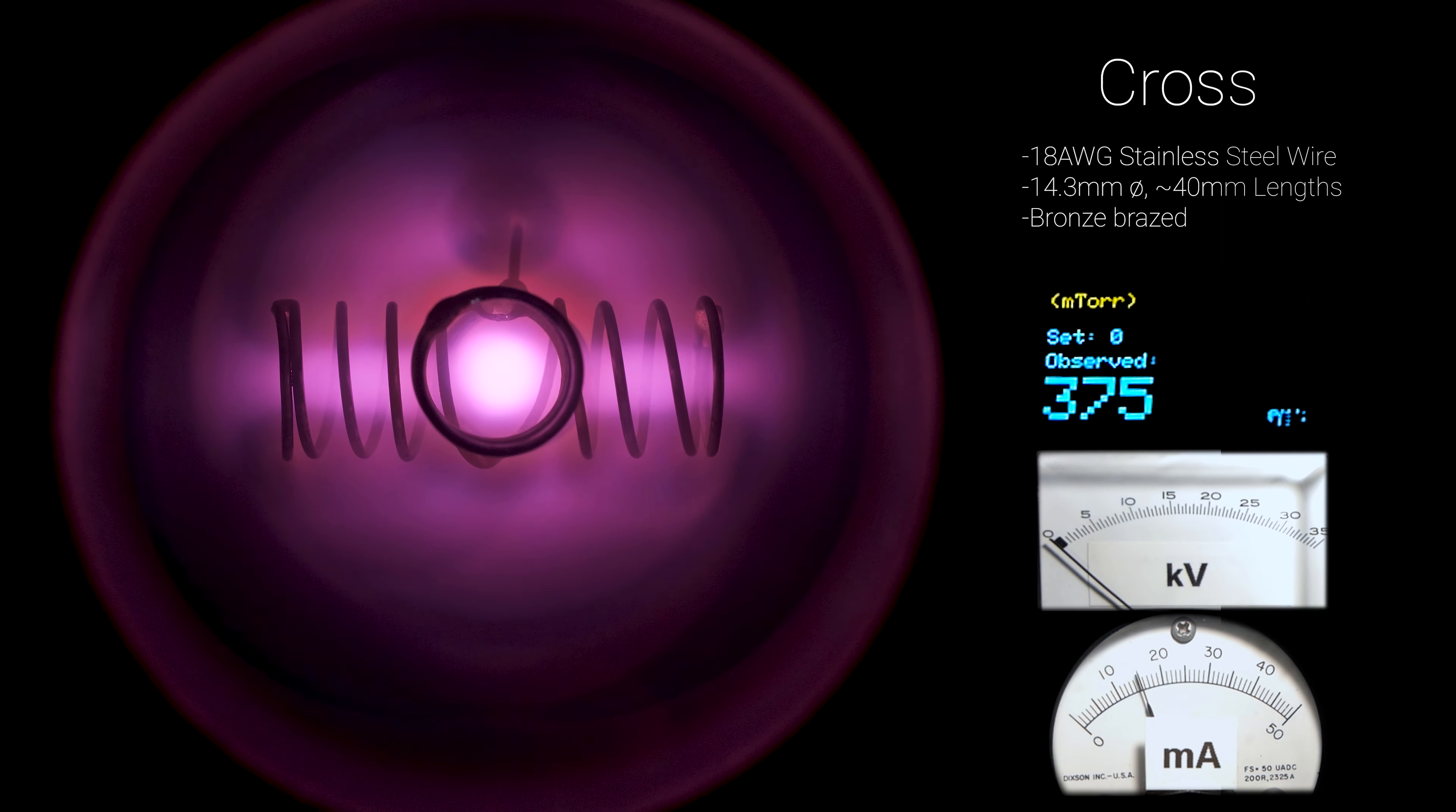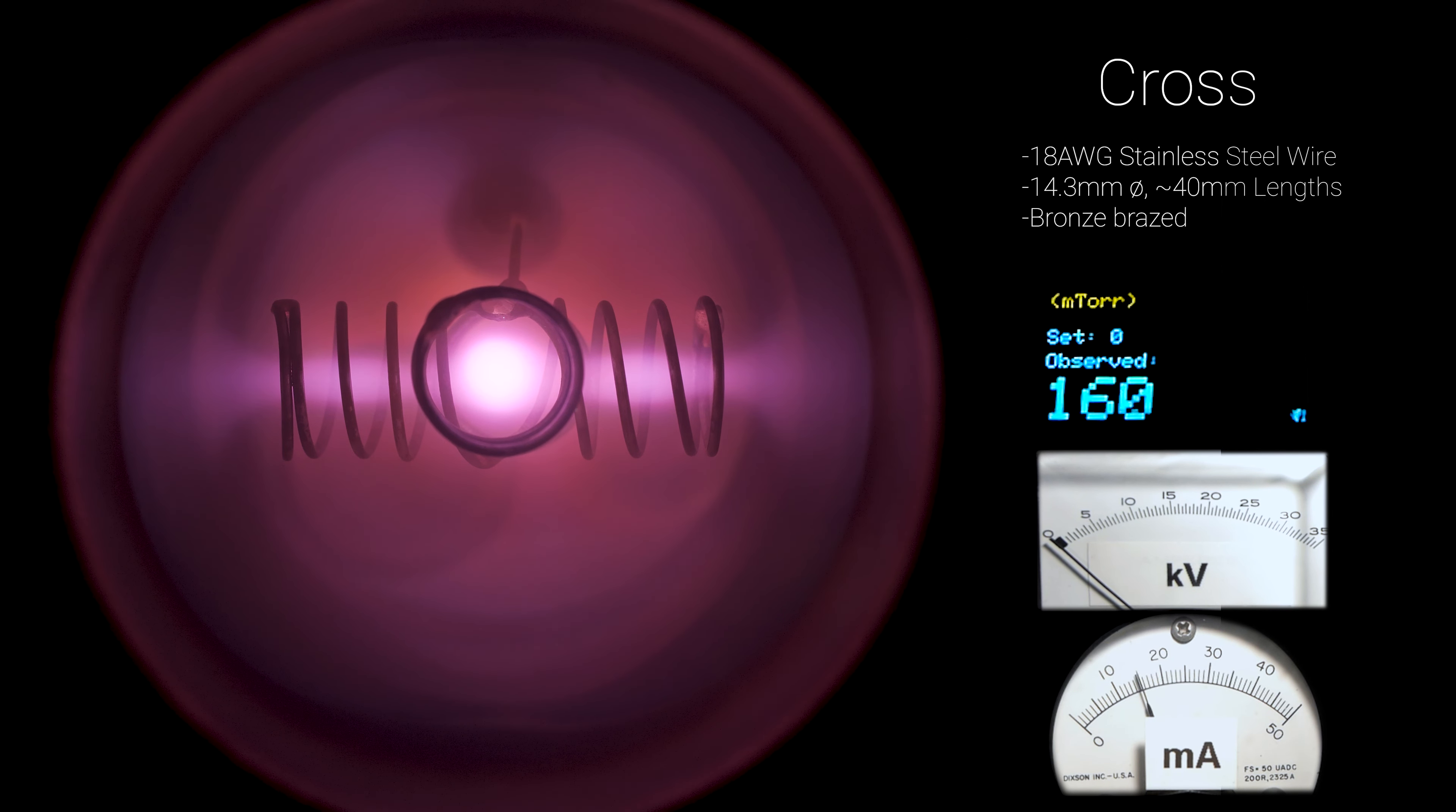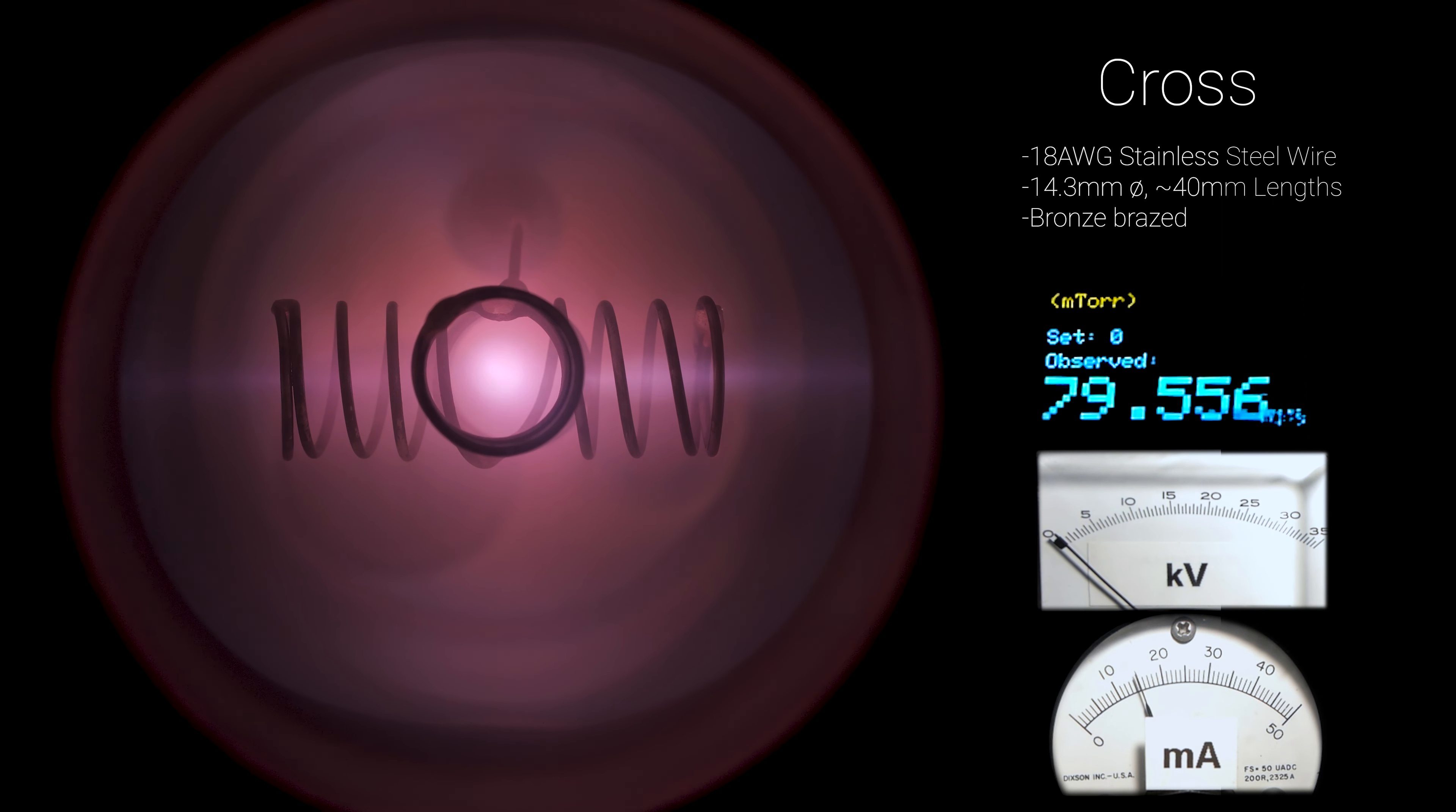This looks pretty similar to the helix at first, but I do notice more of a symmetric poiser formed within the center of the grid. The helix formed more of an ovoid shaped poiser that wasn't very well defined. This one looks more spherical, smaller, and has very well defined edges. This must have to do with the improved symmetry.